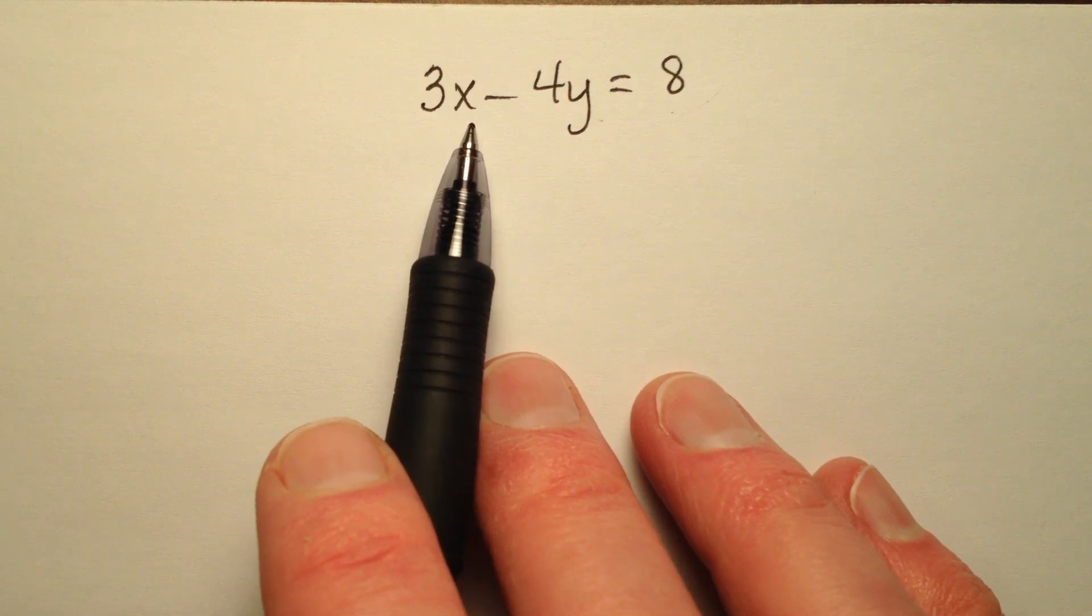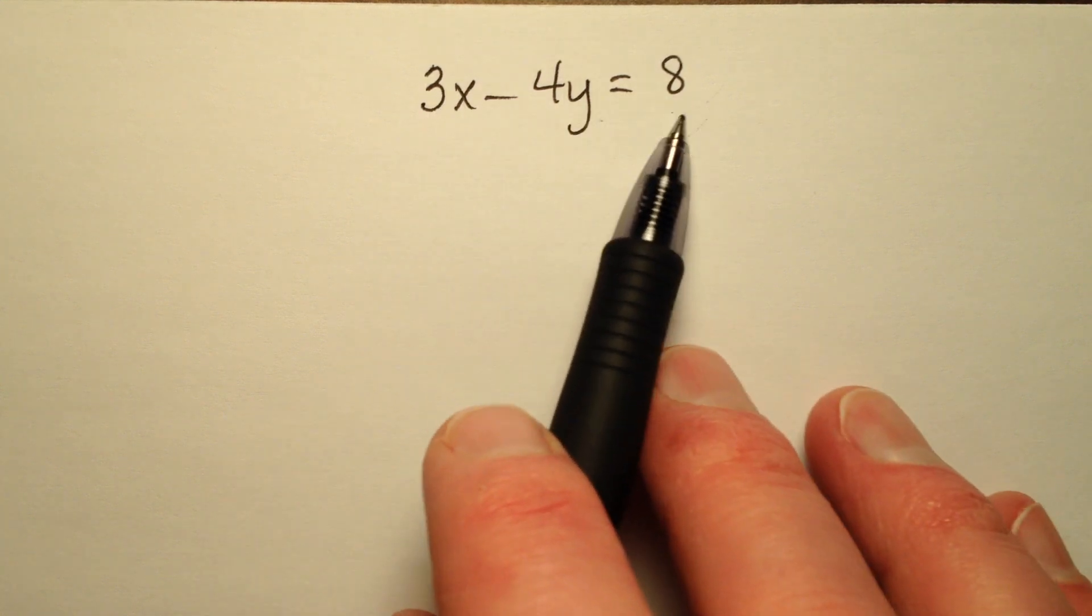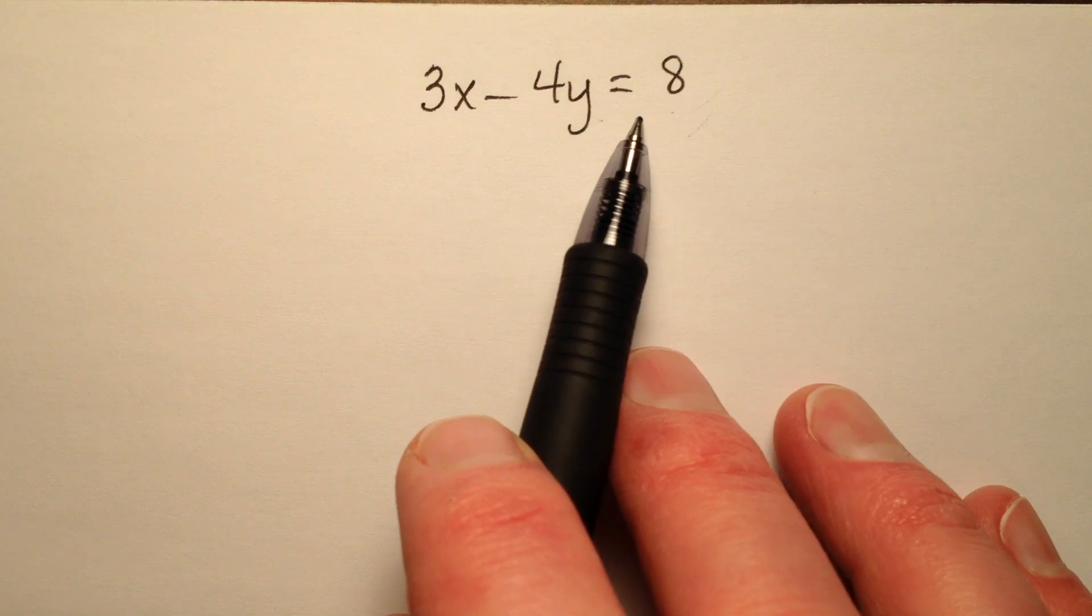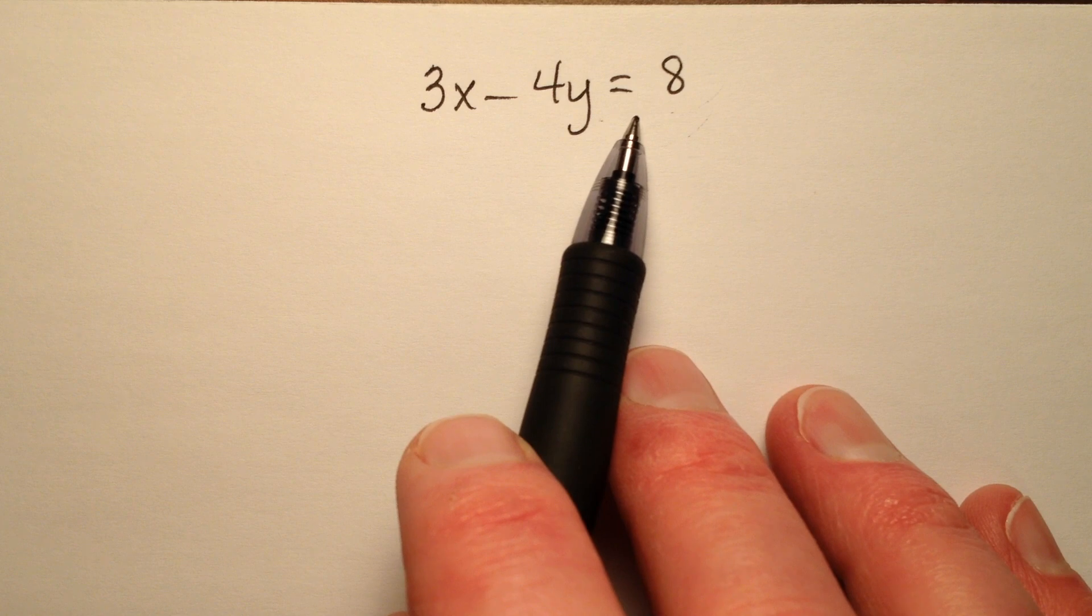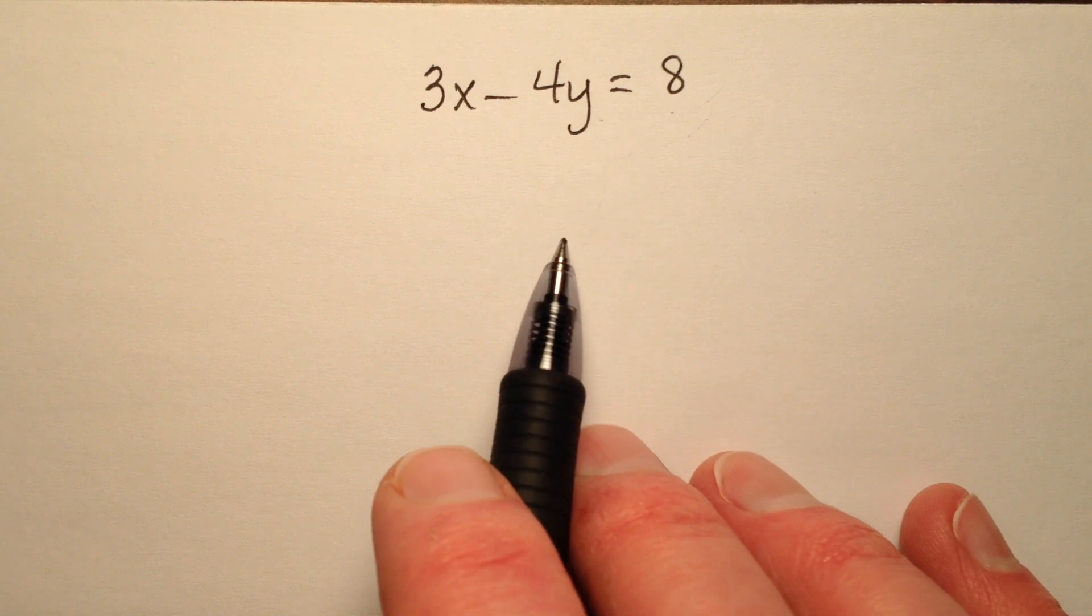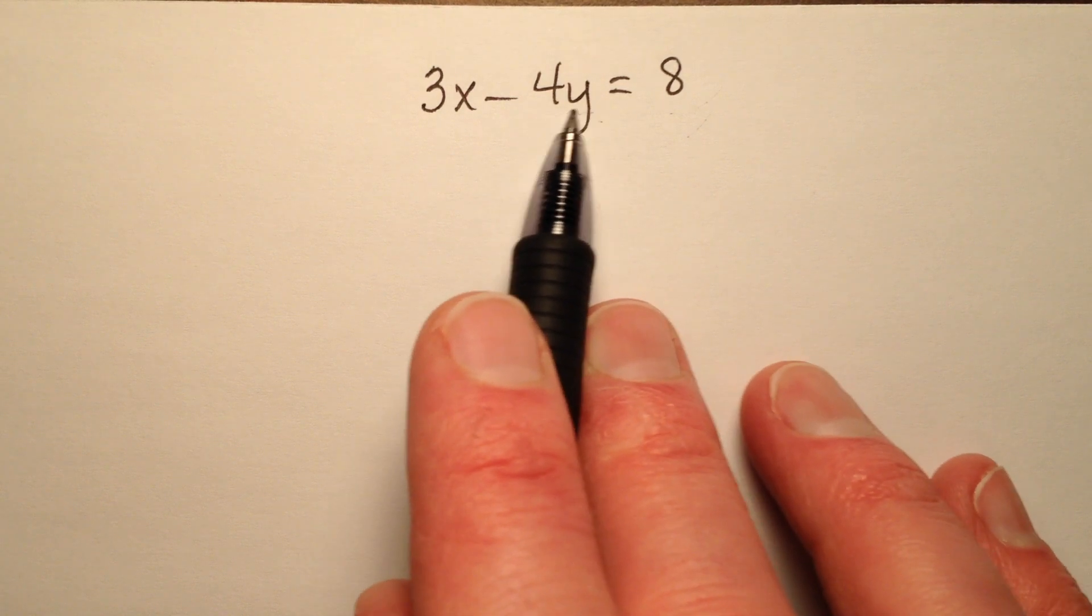So the way we're going to graph this is by first rewriting this equation in slope-intercept form, and then I can grab its y-intercept and slope and go ahead and graph it that way. So in order to do that, I need to solve for y.